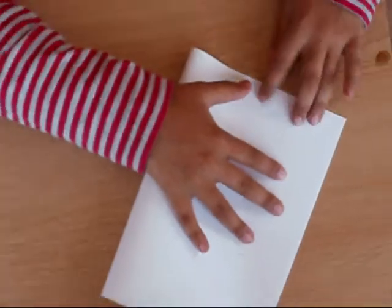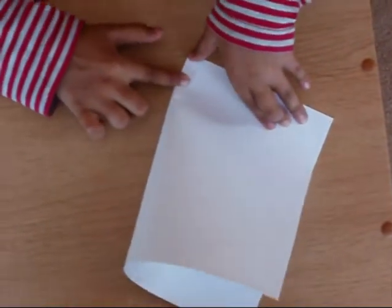Now we're going to begin making our paper boat. So first we will fold the paper in half and crease it really well.